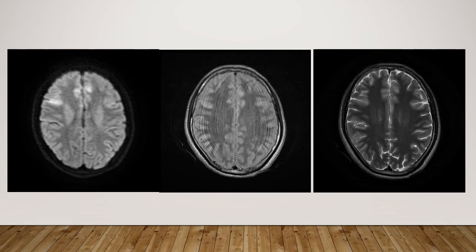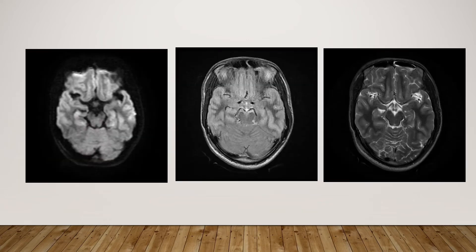In this image also we can see areas of restricted diffusion in bilateral frontal parasagittal cortex as well as the frontal cortex. The white matter is relatively spared. In these images we can see that bilateral hippocampi are also involved. The cerebellum is spared and the brainstem is also normal.